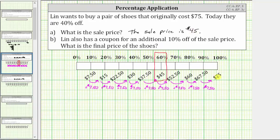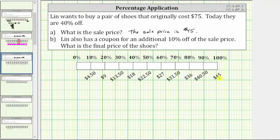We would replace the $75 with $45 and then find 10% of $45, which is $4.50. To complete the tape diagram, we add $4.50 each time the percent increases by 10%.